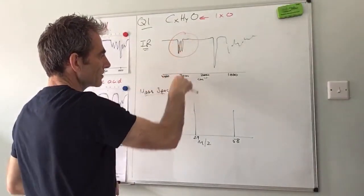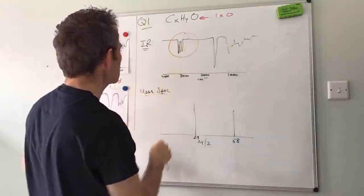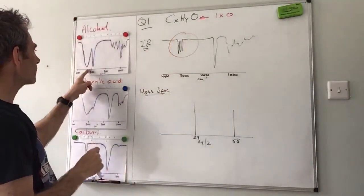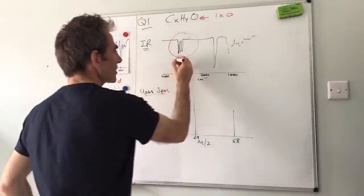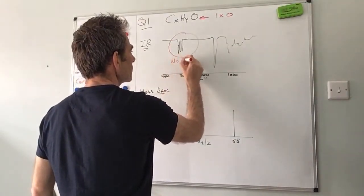Does that absorption there for the OH of an alcohol look anything like that? The answer is no because it's at the wrong wavenumbers - they're at the 3000, whereas the OH of an alcohol is higher than that, further to the left.